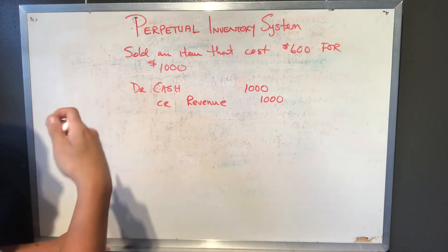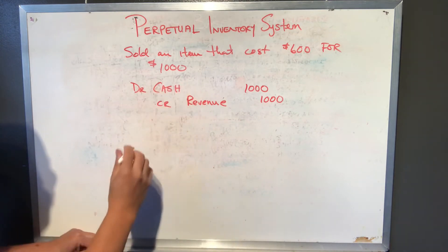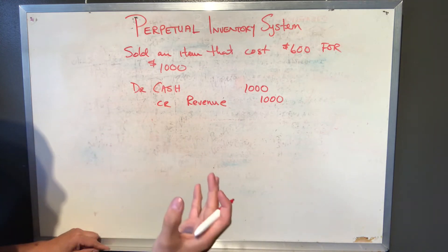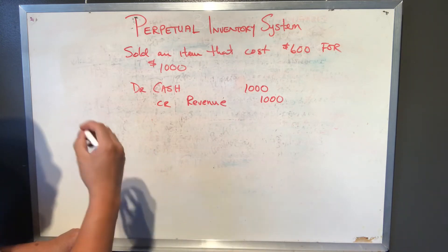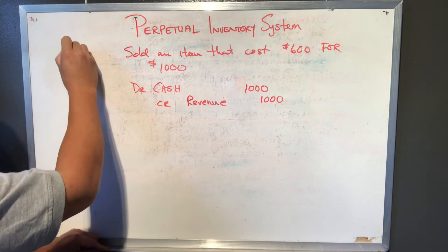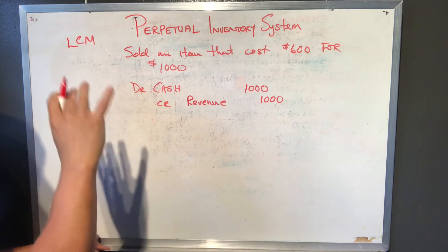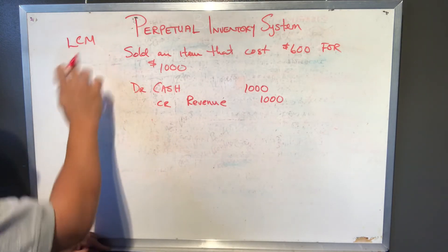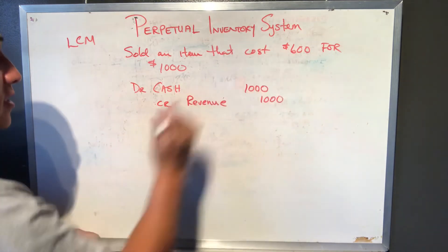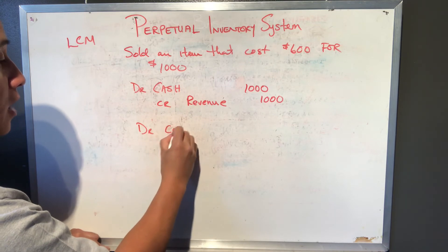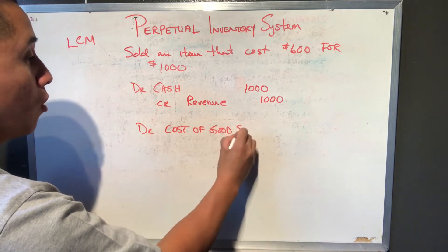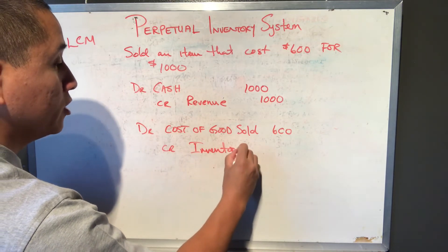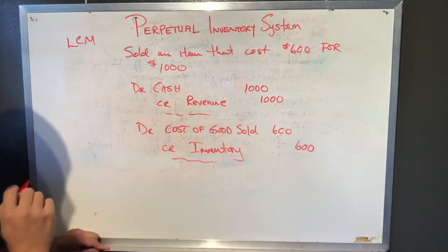Normally when you do journal entries you don't include the dollar symbol. If it was not cash and the customer paid on account, it would be accounts receivable instead of cash. That's the first entry under the perpetual inventory system. The second entry accounts for the expense and reduces the inventory account by the cost of it, because inventory is held at the lower of cost and market. So you would debit cost of goods sold for six hundred dollars and credit inventory to reduce it by that amount. Each entry would also have an explanation underneath.